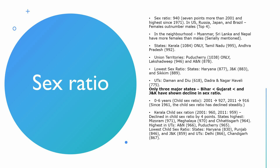As per the 2011 census, the sex ratio is 940, which is seven points more than 2001. So in 2001 it was 933. After 10 years, when the census was done, it increased to 940, meaning we now have 940 females per 1000 males. The number of females has increased.